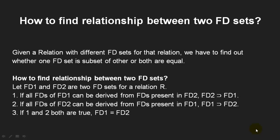The topic is how to find the relationship between two FD sets. You have been given a relation and two FD sets, FD1 and FD2. If all FDs of FD1 can be derived from all FDs of FD2, that means FD2 is a superset of FD1. Also, if all FDs of FD2 can be derived from all FDs of FD1, that means FD1 is a superset of FD2. If both conditions are true, then FD1 and FD2 are semantically equivalent.